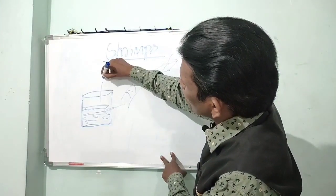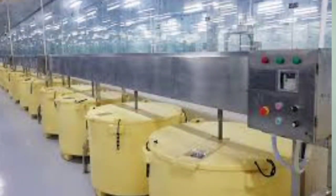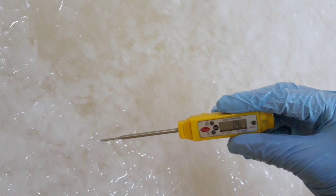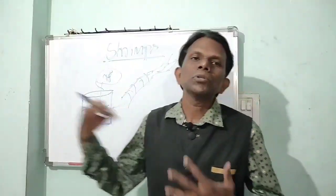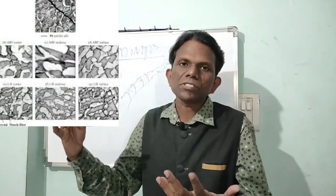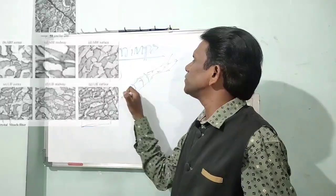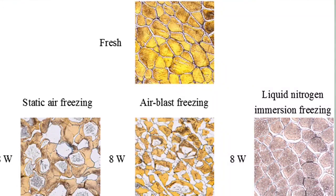If the solution temperature is zero degrees centigrade, the shrimp meat starts forming big ice crystals. Because we are adding salt to the solution, the temperature can reach minus 0.1, minus 0.2, down to minus 0.6 or minus 0.7 degrees centigrade — sub-zero temperatures. At sub-zero, slow freezing occurs in the shrimp cells, forming large ice crystals.